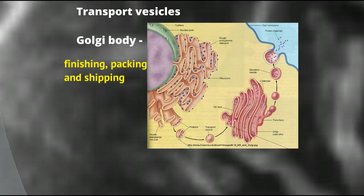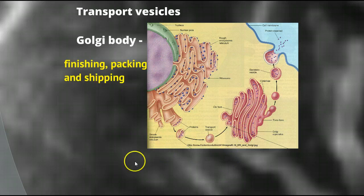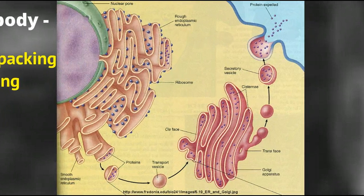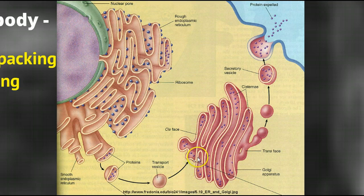These proteins that are produced must first be sorted and packed to be shipped out of the cell, and that's the job of the Golgi apparatus. For a very descriptive video on how the Golgi works, click the link posted below. Our Golgi apparatus is for the sorting and shipping of proteins out of the cell. As the proteins get transported here via vesicle from the ER, they move through the Golgi, get further modified and sorted, and are processed for shipment via a transport vesicle out of the cell.